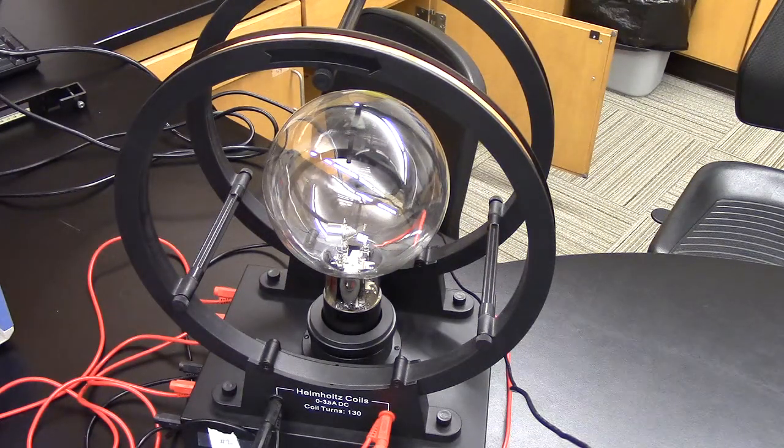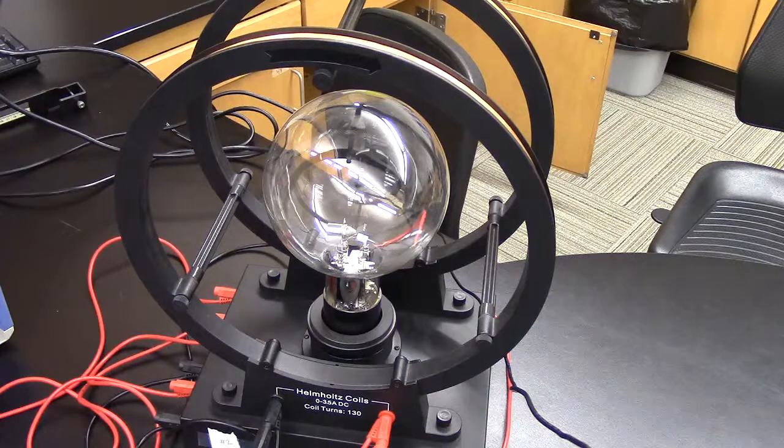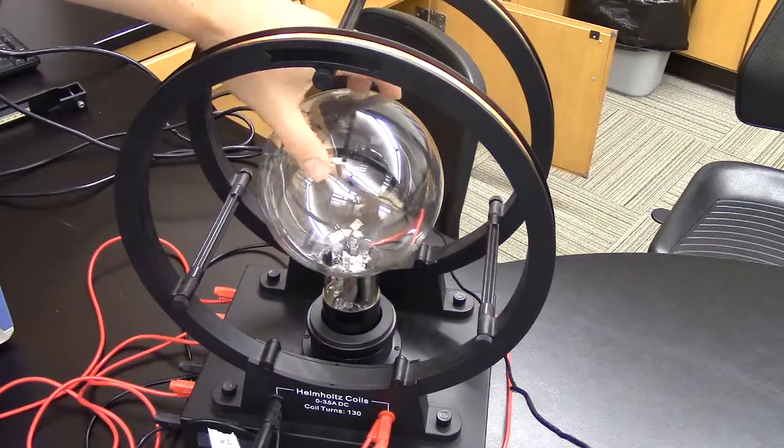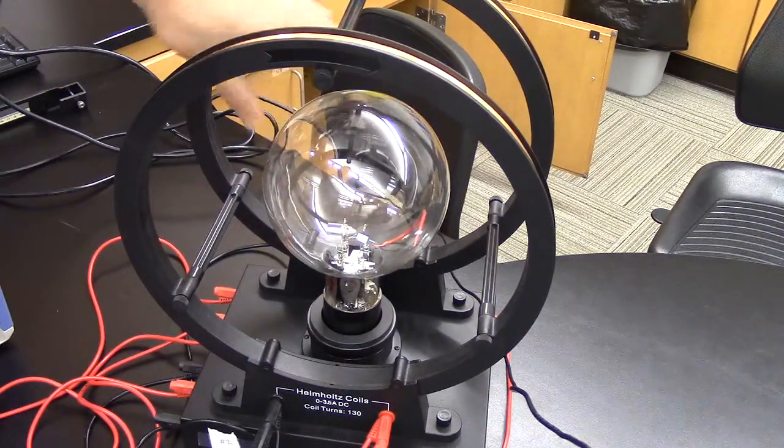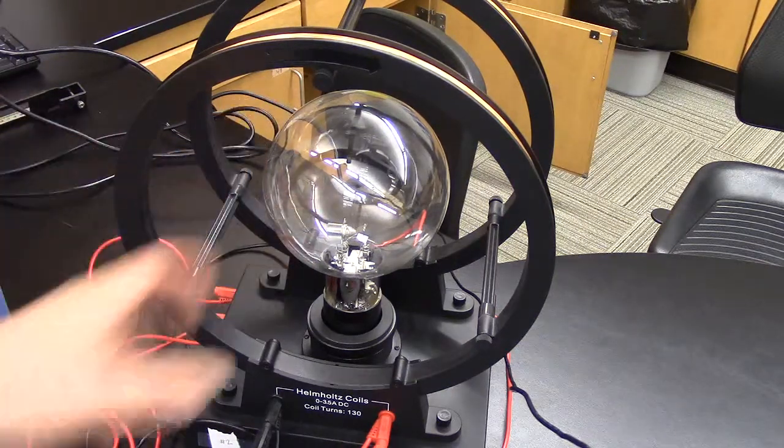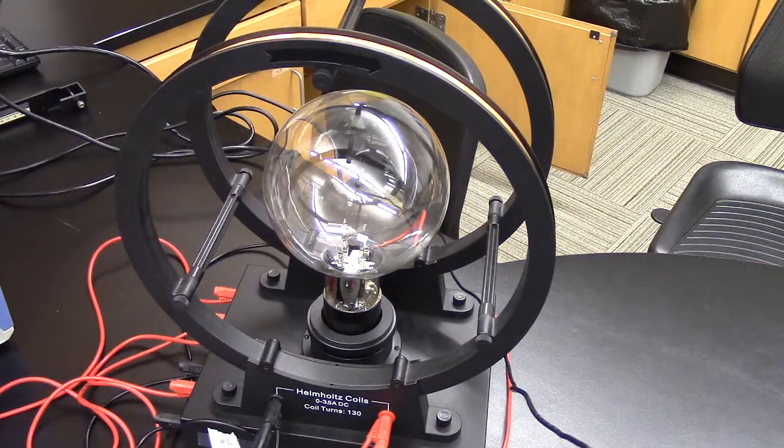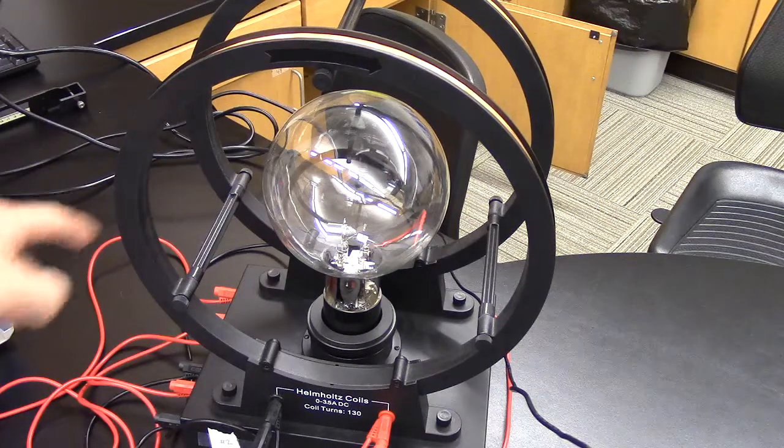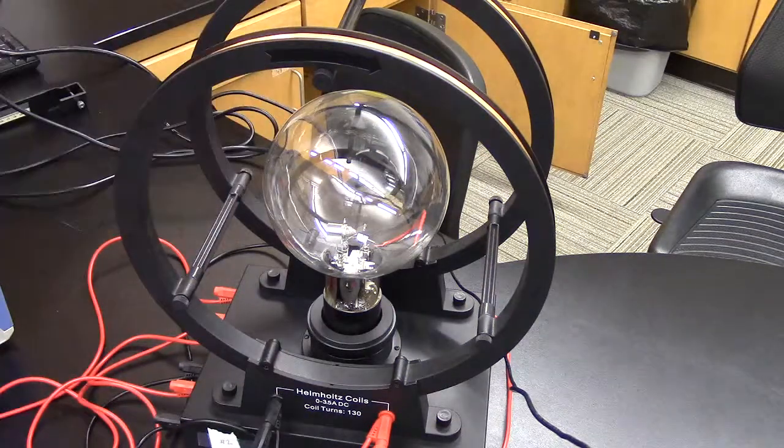However, the filament is still glowing. I guess we can't see that from this high camera angle. The filament is glowing, so I still have electrons in that region, but we want to observe what happens when we turn on the power supply connected to these large metal coils.